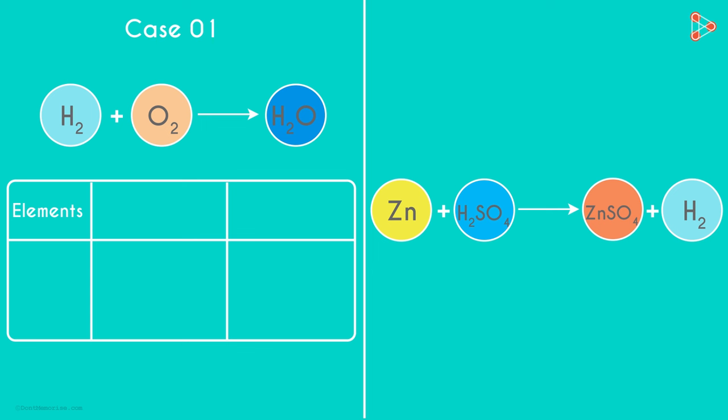In the second column, we write the number of atoms in the reactants. And in the third, we write the number of atoms in the products. Which are the elements involved in the first equation? Just two elements. So we write H and O in the first column.